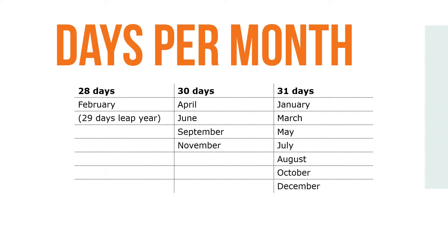Here is the days per month chart. It shows that there are 28 days in February, 29 days in a leap year, 30 days in April, June, September, and November, and 31 days in January, March, May, July, August, October, and December.